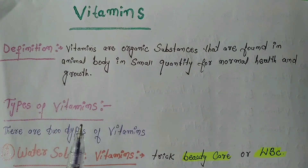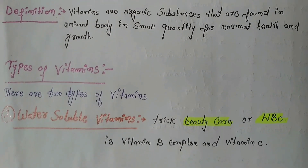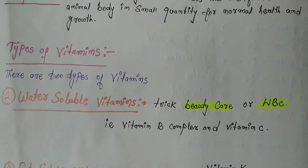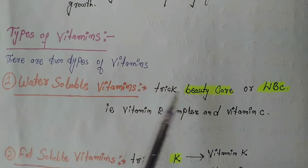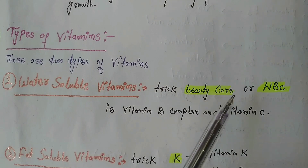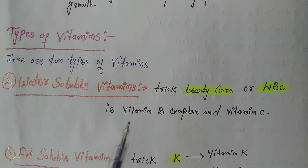There are two types of vitamins. The first is water-soluble vitamins — these are the vitamins that are soluble in water. The trick to remember them is 'WBC': that is Vitamin B complex and Vitamin C.